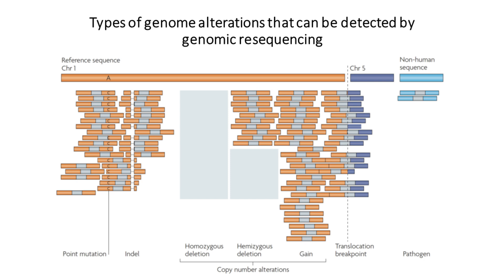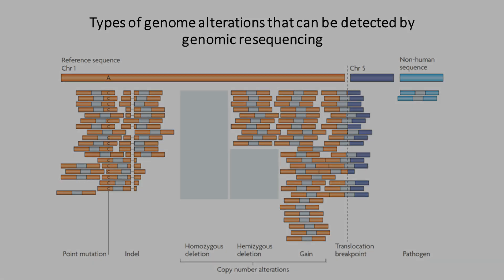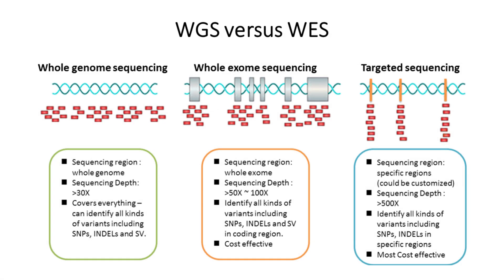For the same cost, more samples can be sequenced to the same depth but over a smaller genomic region. Here we discuss the merits of whole genome sequencing (WGS) relative to targeted resequencing approaches including whole exome sequencing. High depth WGS is the gold standard for DNA resequencing because it can interrogate all variant types — including SNVs, indels, structural variants, and CNVs — in both the protein-coding minority and the non-coding majority of the human genome.